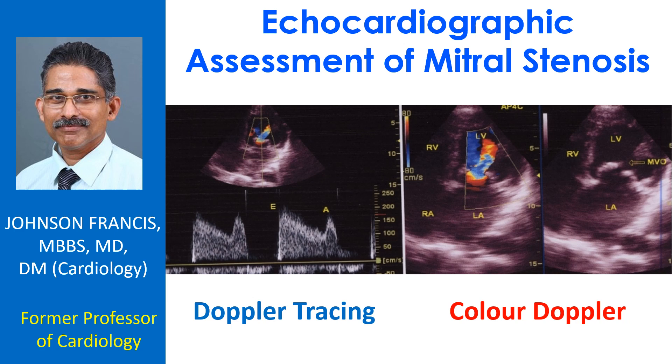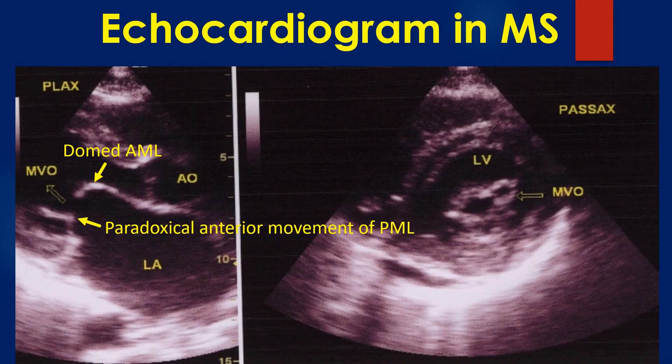Assessment of mitral stenosis by echocardiography. The right panel shows the parasternal long axis view. Doming of the anterior mitral leaflet is seen well and has the appearance of a hockey stick. This appearance is classical of rheumatic mitral stenosis.